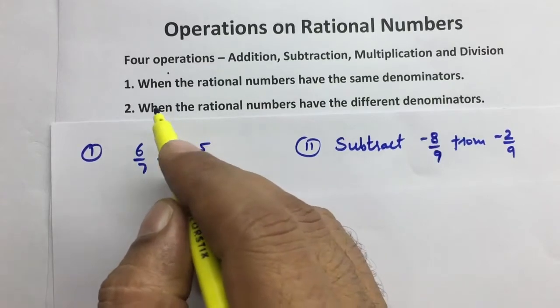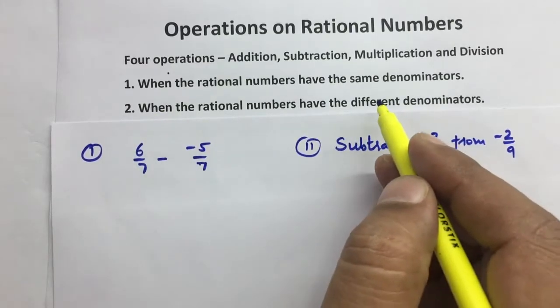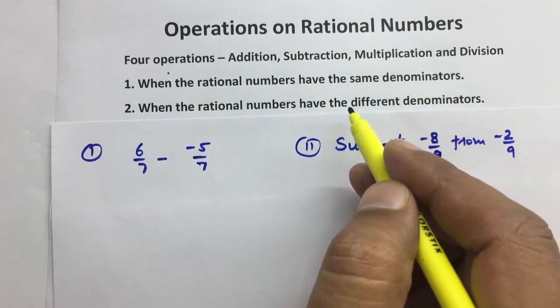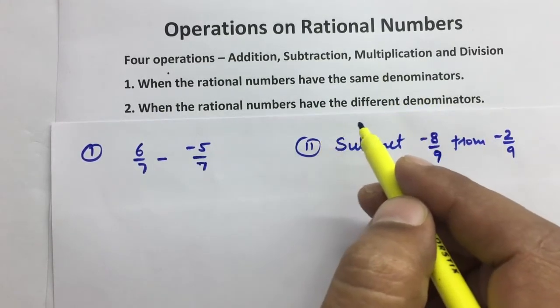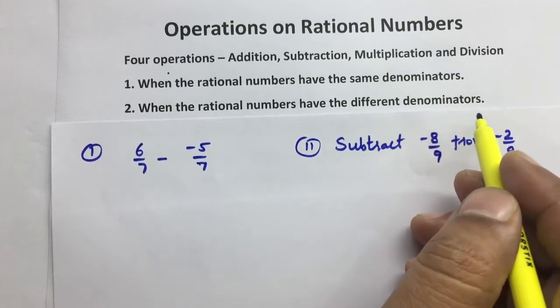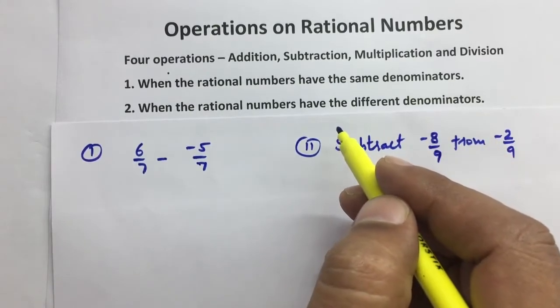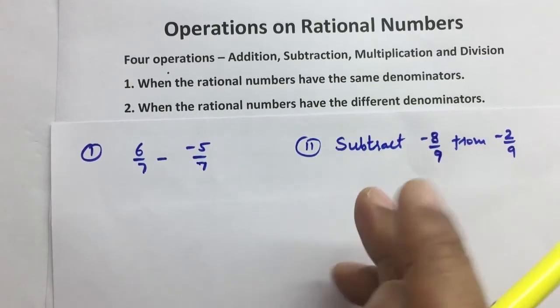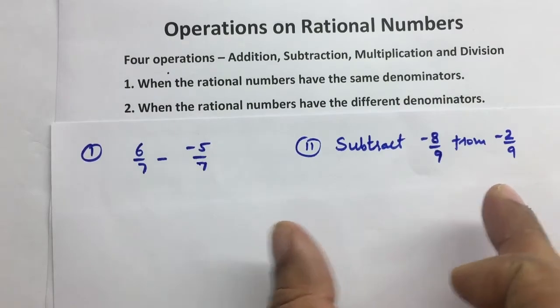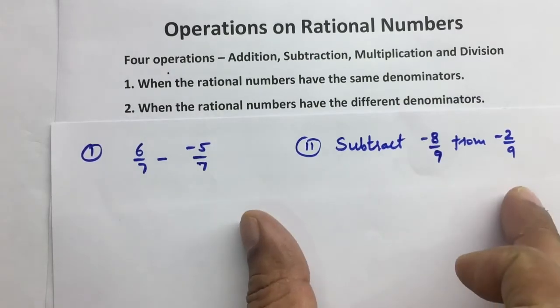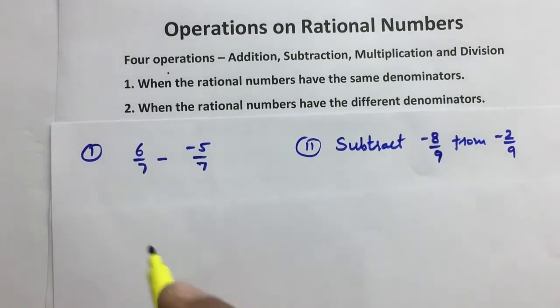Iske andar do case hain. First case hain when the denominators are same, and the second case when the denominators are different. Iske liye maine yahan par do questions liye hain — dono ka jo hai denominator same hain.